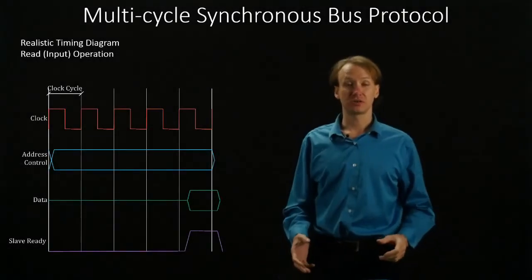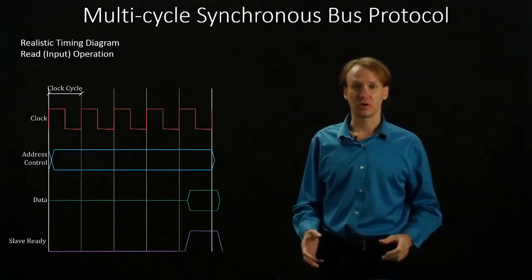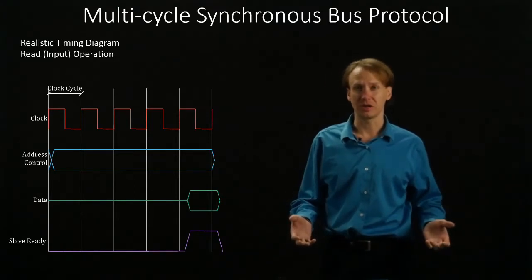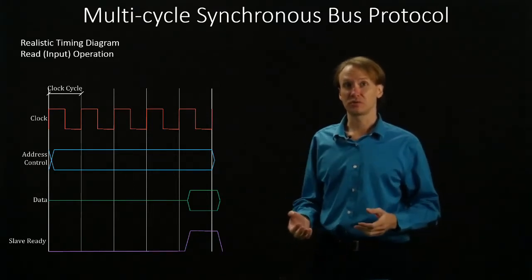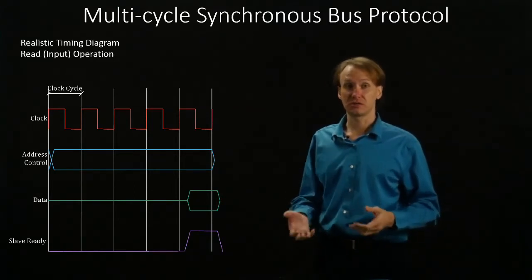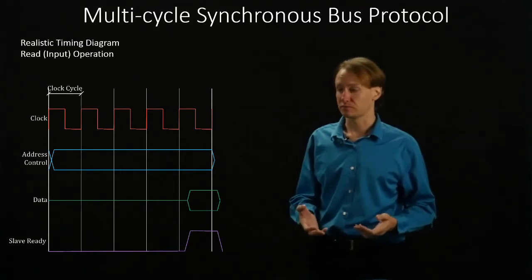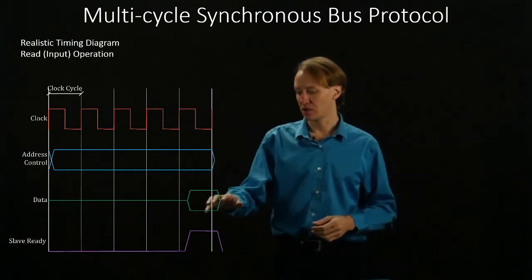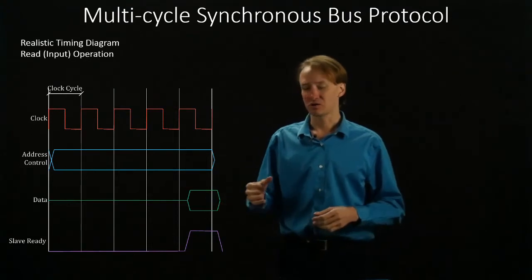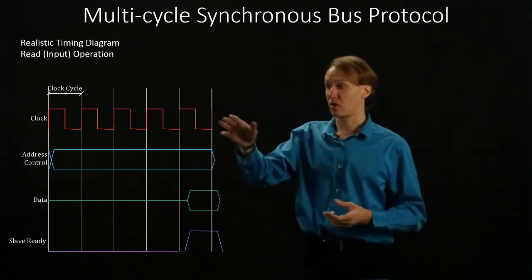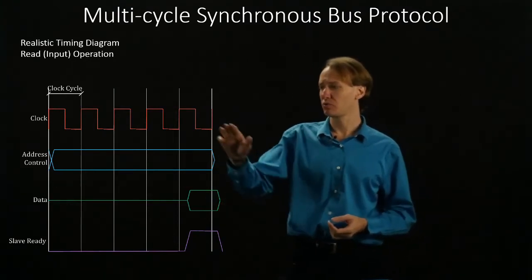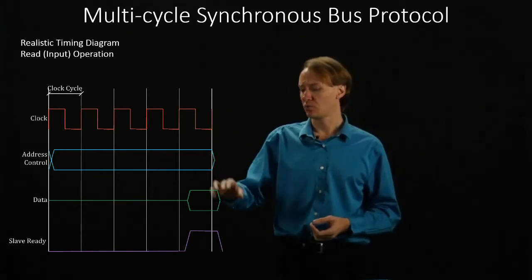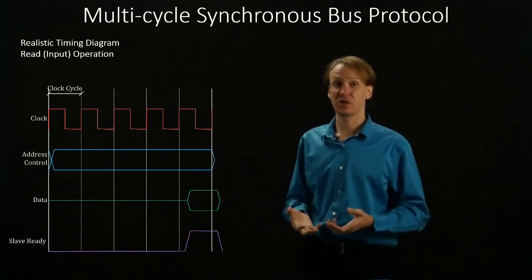In the multi-cycle synchronous bus protocol, the differences between the theoretical timing and the actual timing are pretty similar to those that we saw in the single cycle synchronous bus protocol. Again, we've got some delay because our master and our slave are not in the same place as our clock. So there's a delay between when the clock cycle actually changes and when one of the devices sees that change occur.